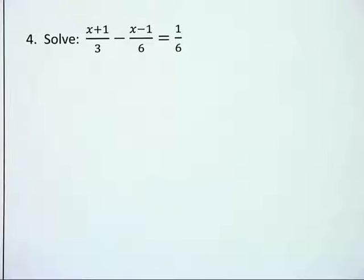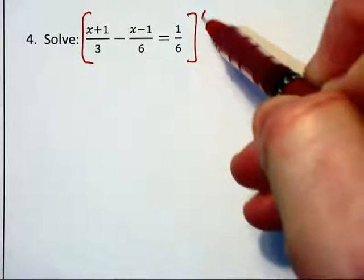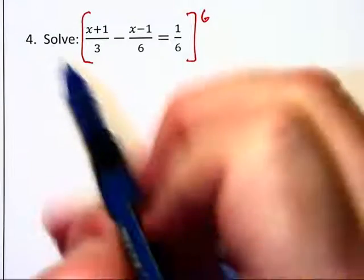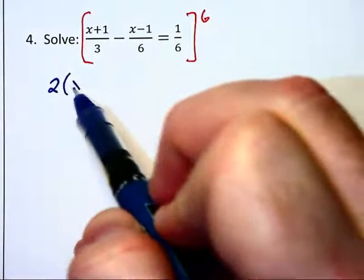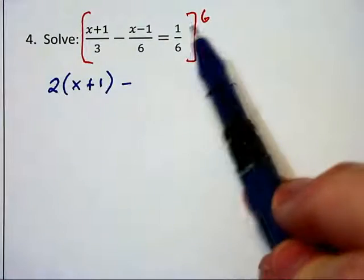Let's solve number 4 by multiplying through by the least common denominator, which is 6. And in the first fraction, the 6 cancels with a 3, leaving 2 times x plus 1, minus, and here's where the mistakes occur.